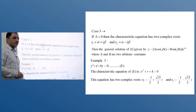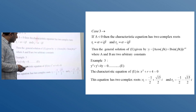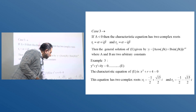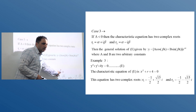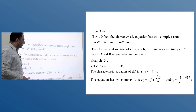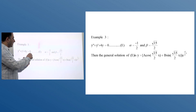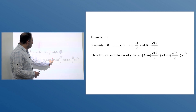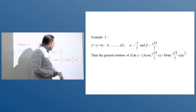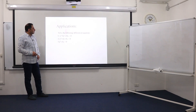This is the general solution when delta is negative. Example: y'' + y' + 4y = 0. The characteristic equation is r² + r + 4 = 0. Solving it, the real part is α = -1/2 and the imaginary part is β = √15/2 — so the roots are complex. We need only one of them. Plugging into the formula, the general solution is: y = e^(-x/2) · [a·cos(√15·x/2) + b·sin(√15·x/2)], where a and b are arbitrary constants.